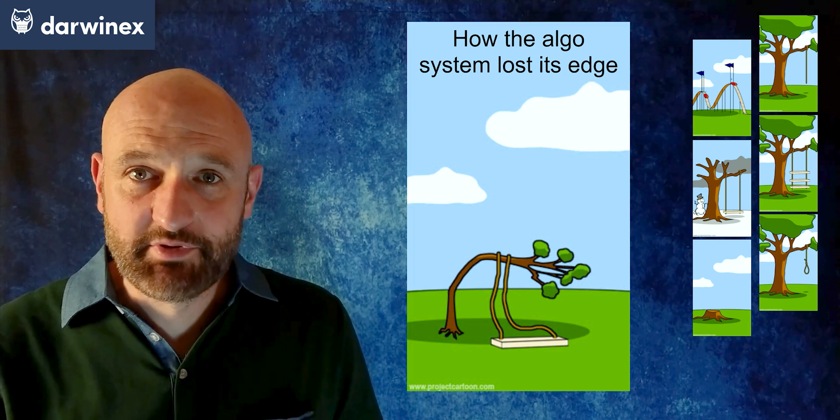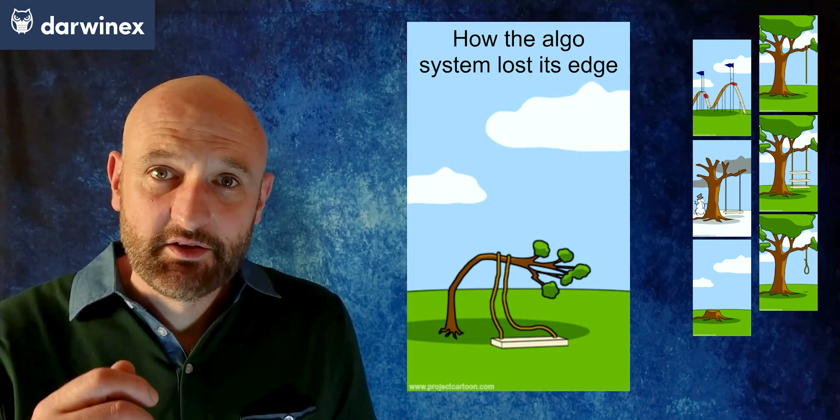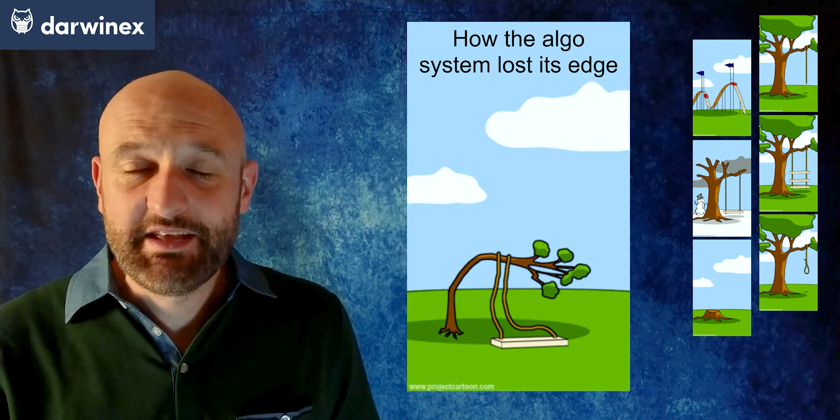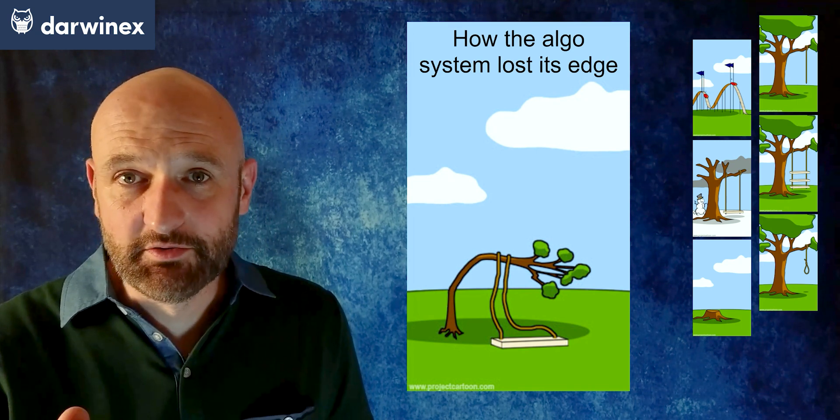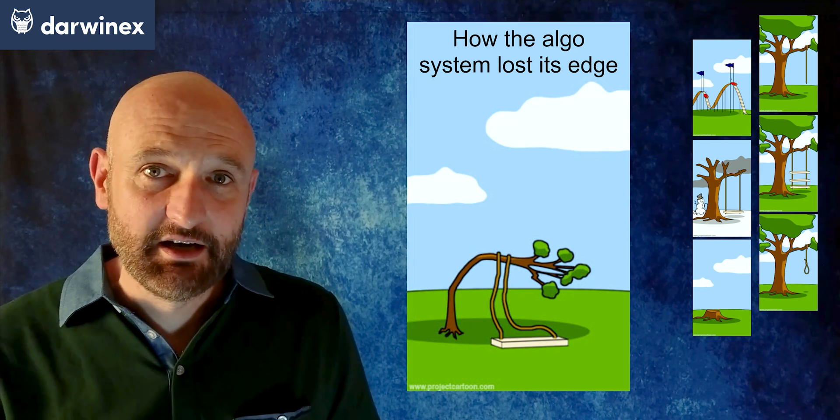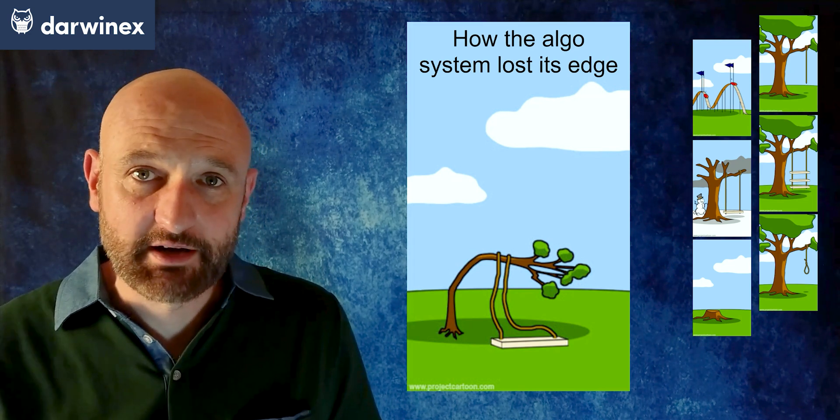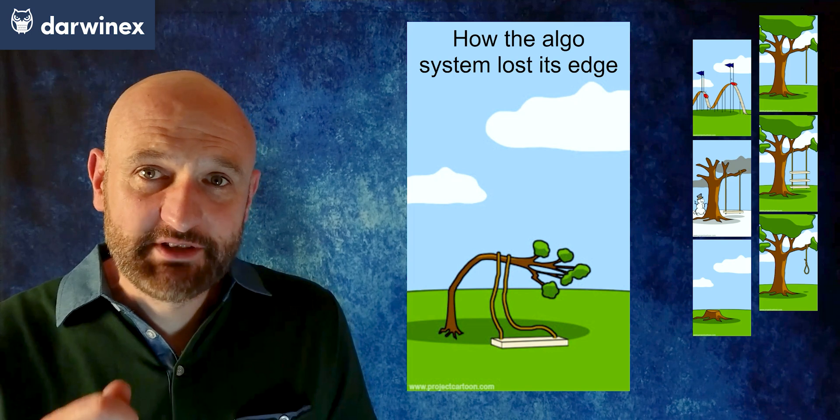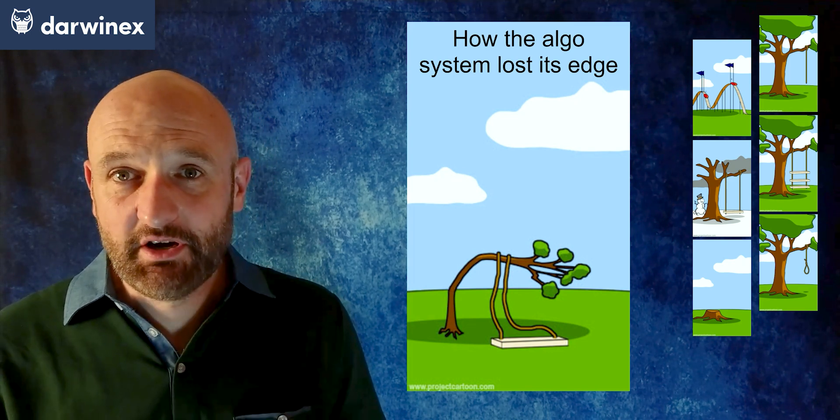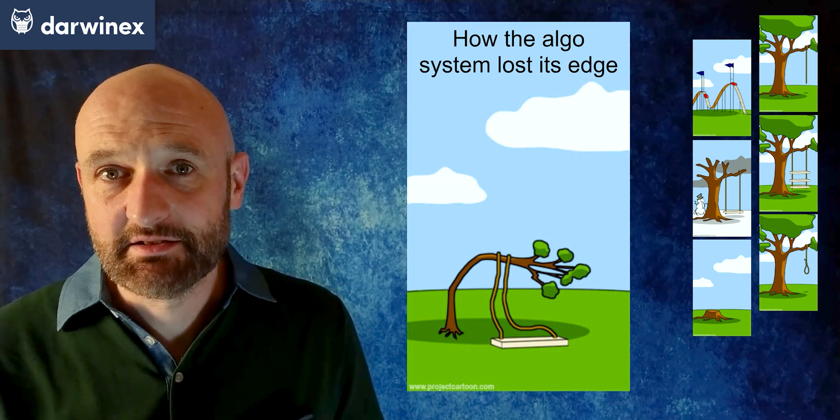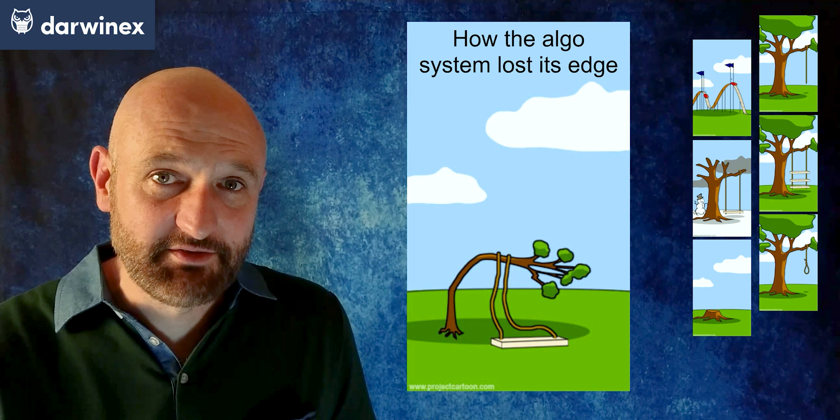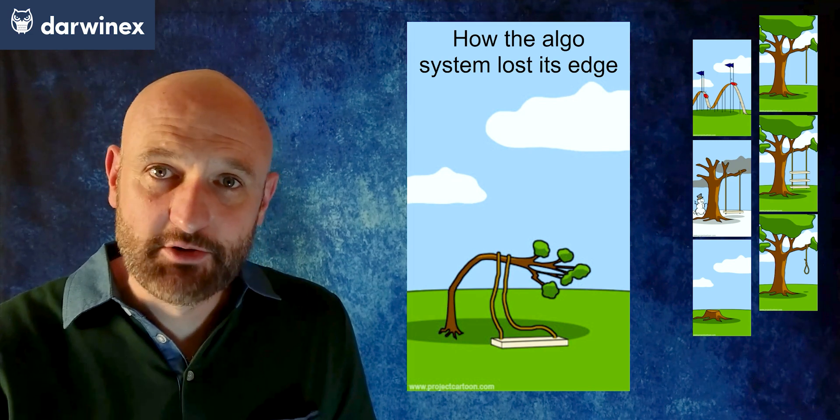And then basic supply and demand principles mean that for those users that enter slightly after the others, the price of the asset might already have moved and they'll be getting into and out of the trade at a slightly less favorable price. And these small differences on every trade all add up and can actually start to have a significant effect. So ultimately this means that any edge the system might have had begins to get eroded away.